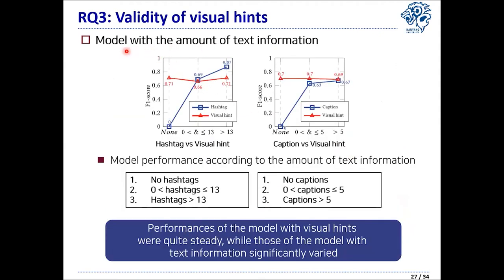This table shows the performance result of models based on fine-tuning and transfer learning. Our model with visual hints showed the best performance among other models. We also investigated the robustness of visual hints by developing models using either hashtags or captions with different amounts of text information. The performance of the visual hints model was quite steady over different conditions, while the text model highly varied by each condition, showing the robustness of visual hints as features for emotion models.